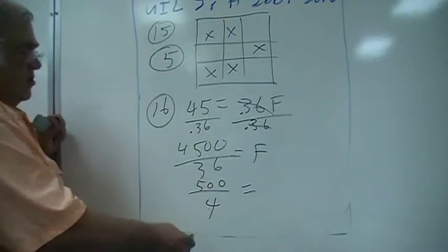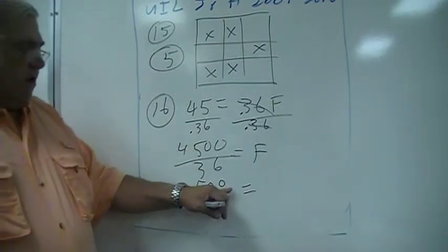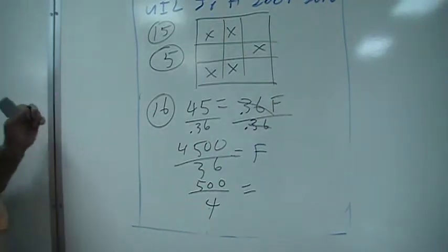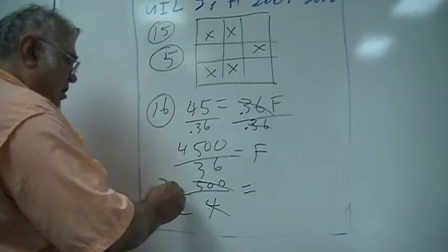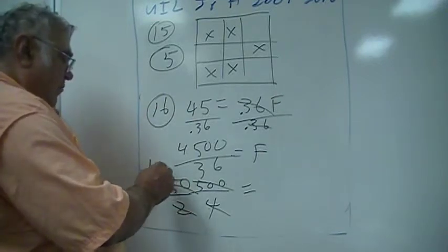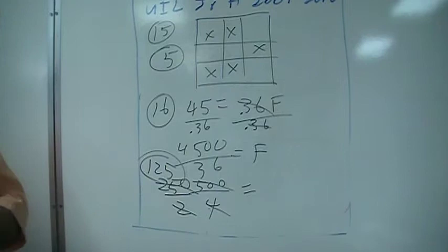Four times nine is 36, and five nines is 45, so that's 400. Then I think half of this is 250, and half of 250 is 125, so the answer to that one is 125.